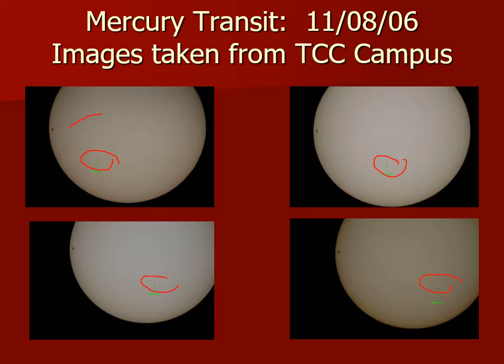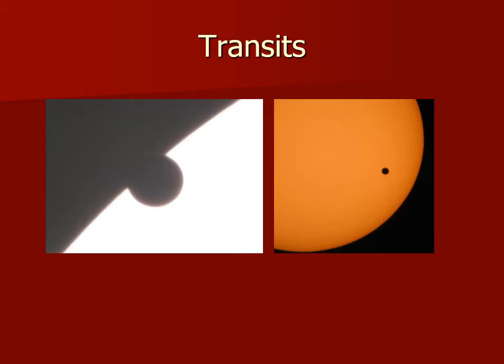It doesn't look like much. There's a big dot over here — that's a sunspot — but that little dot right there is the planet Mercury as it's transiting the sun. Mercury is very small, not a whole lot bigger than our own moon, and it's quite far away, so when it passes in front of the sun it's a very small shadow. Venus, on the other hand, is quite large by comparison. Venus is much closer to us and is almost the size of Earth, so when Venus passes directly in front of the sun, it's a much bigger shadow.